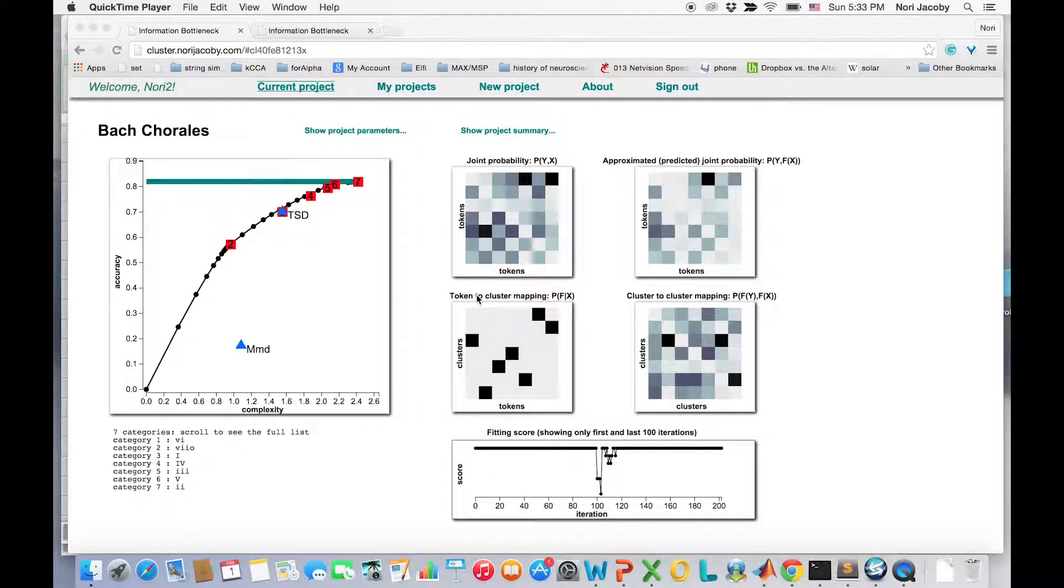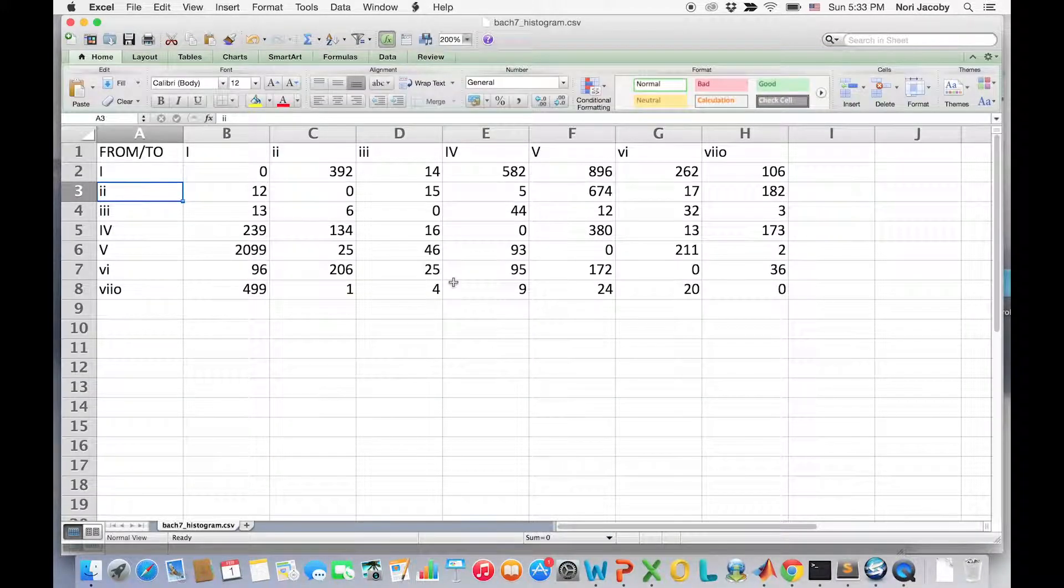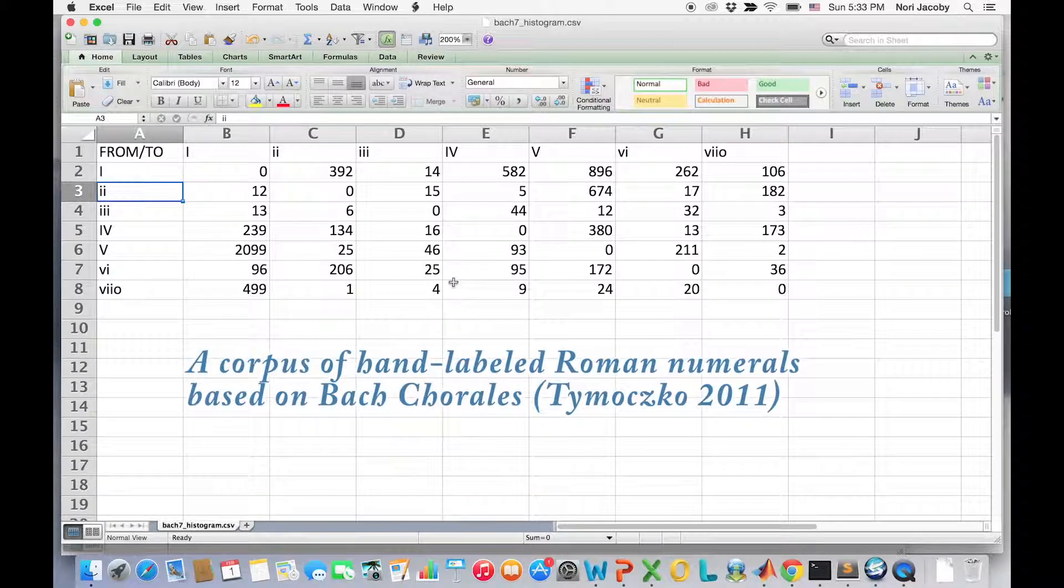Hi, my name is Nori Jacobi and I'm going to show you how to categorize chords using my information bottleneck applet. Let's start with the input. We will input a joint distribution of chord bigrams taken from a corpus of Bach chorales.